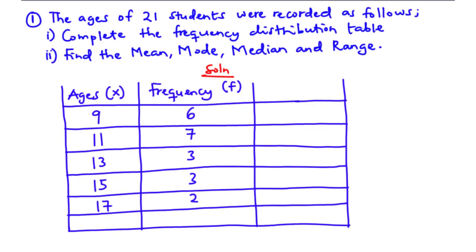Let's begin today's lesson by considering this example. For example one, the ages of 21 students were recorded. We need to complete the frequency distribution table and find the mean, mode, median and range for this distribution. Here we have an incomplete frequency distribution table that we are to complete.